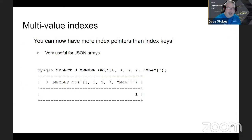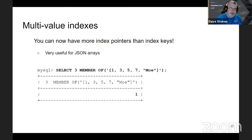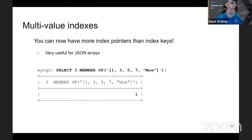Multi-value indexes came out fairly recently. With the JSON data type, people were putting extensive JSON documents with arrays, and before multi-value indexes every index entry could only point to one row in a data table. With all those arrays that didn't make sense, so with multi-value indexes you can now have more index pointers than rows. In this example we're looking for the value of 3 in a JSON array.